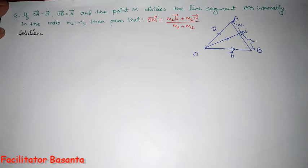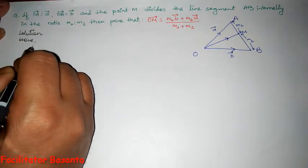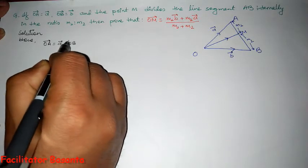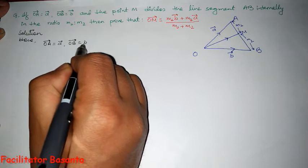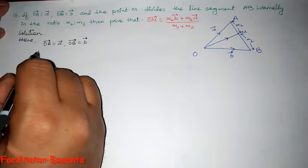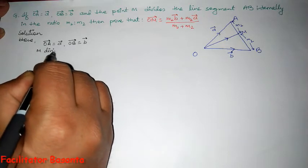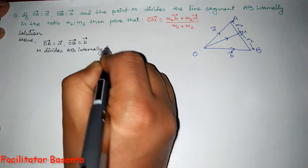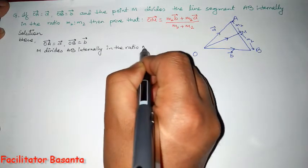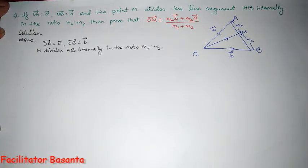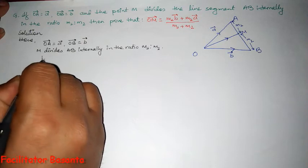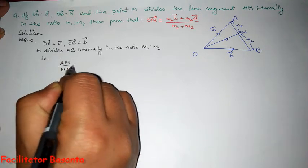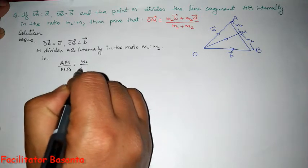The solution: here, what is given? First we write the given. OA equals A vector. OB equals B vector. M divides AB internally in the ratio M1 is to M2. That is, AM divided by MB equals M1 is to M2.